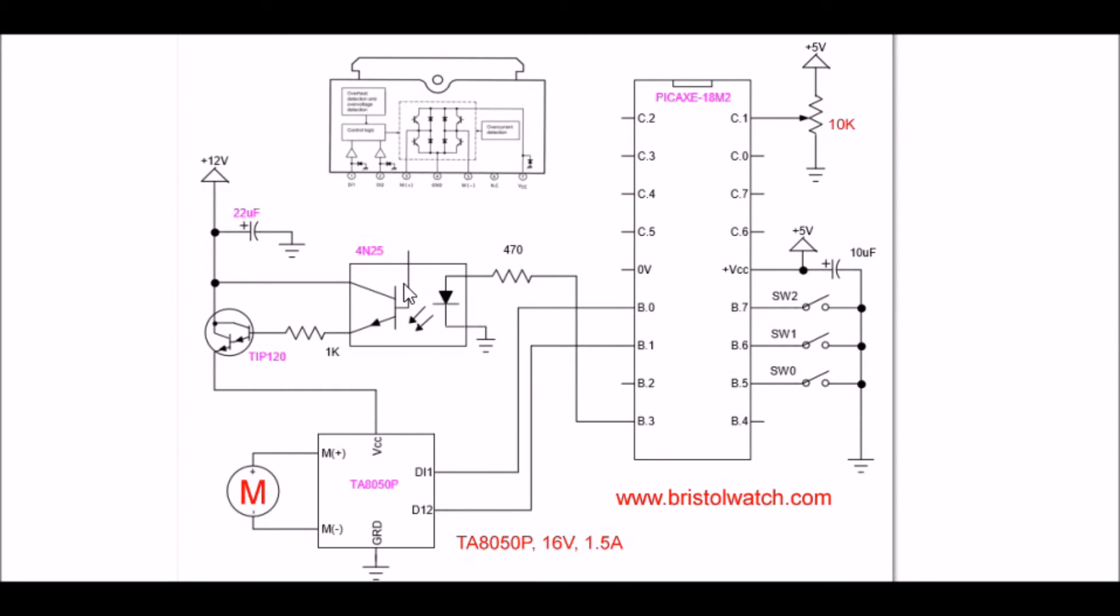goes through this optocoupler to this TIP120 NPN Darlington. And this is a bypass capacitor. What I'm doing is pulse width modulating the VCC side of the H-Bridge in order to control the speed.